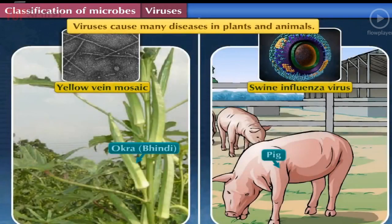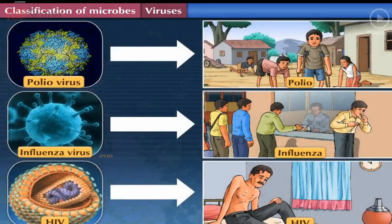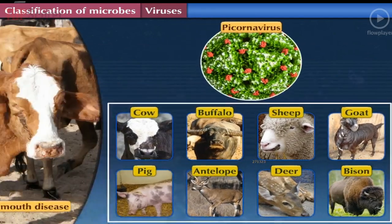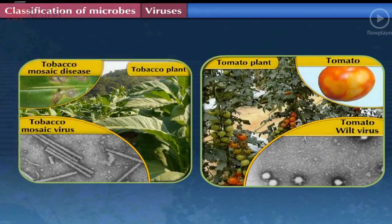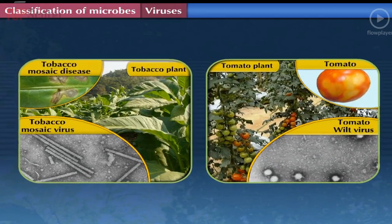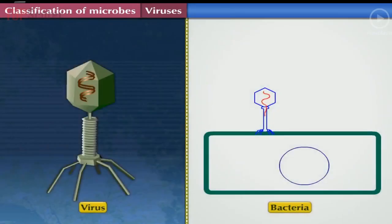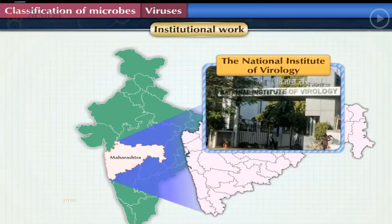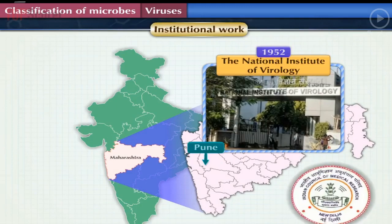Viruses cause many diseases in plants and animals. Poliovirus, influenza virus, and HIV cause diseases in humans. Picorna virus causes diseases in animals, for example foot-and-mouth disease in cattle. Tomato wilt virus and tobacco mosaic virus cause diseases in tomato and tobacco plants. Some viruses even attack bacteria — such viruses are called bacteriophages. The National Institute of Virology, Pune, is involved in research on viruses and was founded in 1952 under the Indian Council of Medical Research.